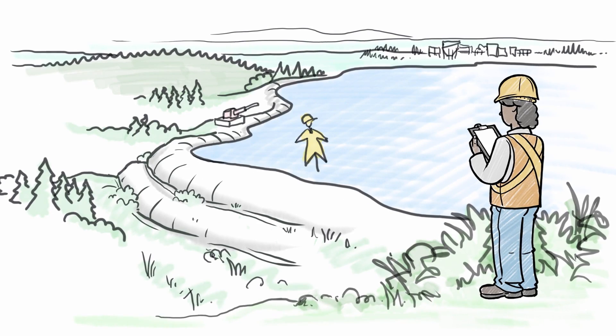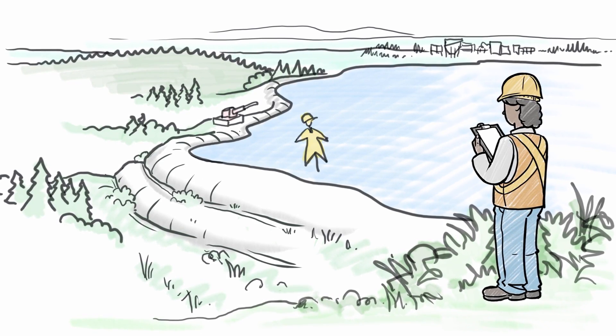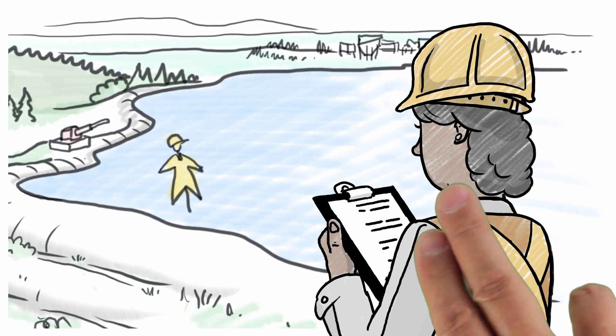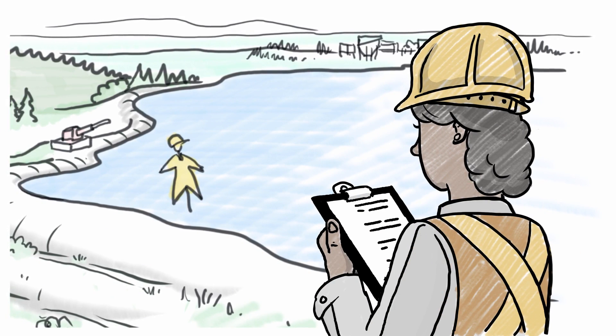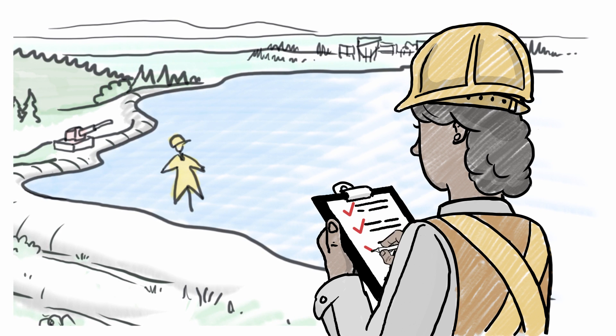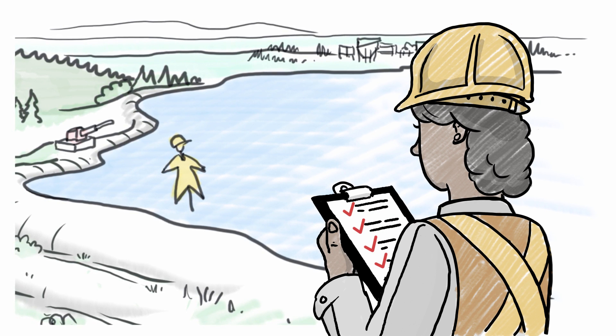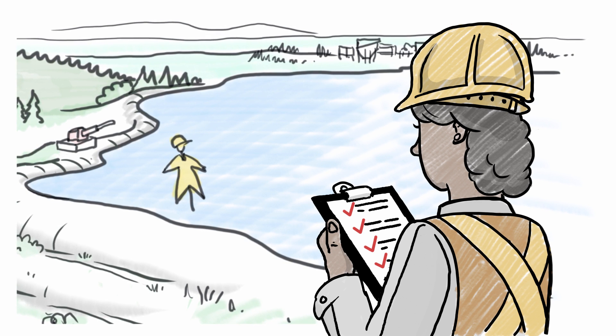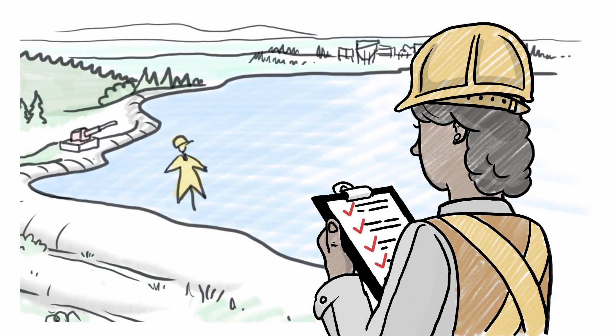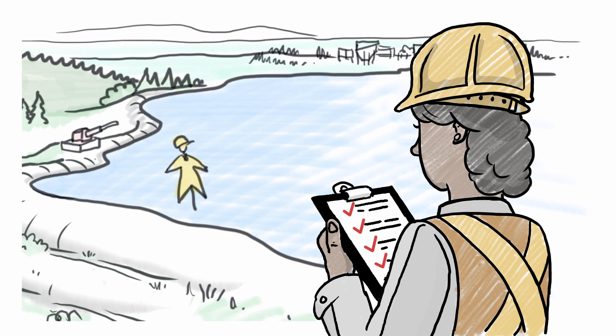Albertans expect the land will be returned to its natural state as soon as possible. To do this, the AER has technical experts who monitor how operators are managing their tailings and take action when there are concerns. And the AER has new requirements that will provide additional direction to operators and give Albertans regular progress reports.